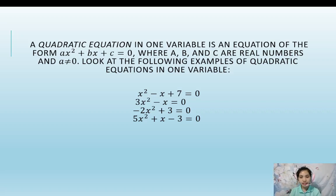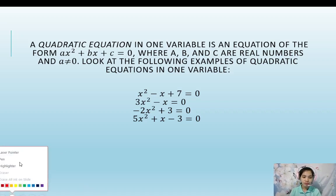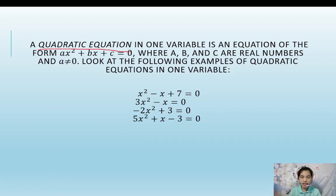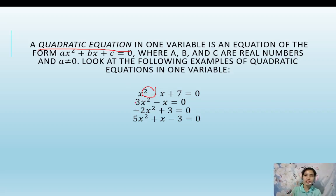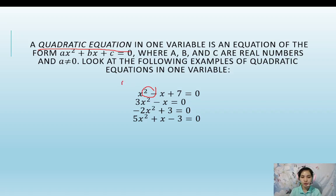Look at the following examples of quadratic equations in one variable. Why do we call an equation a quadratic equation? We look at its degree. If the leading degree of an equation is 2, we call it a quadratic equation.